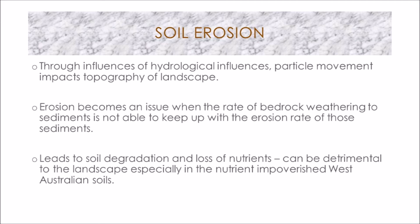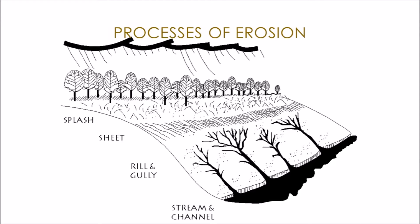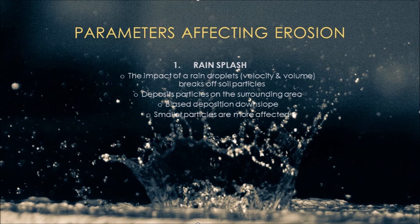The force of rainfall causes rain splash and contributes to the processes of sheet, rill, and gully erosion. Rain splash erosion occurs when rain droplets hit the ground with a force strong enough to mobilize soil particles. This creates an impact crater caused by the volume and velocity of the rain droplet, breaking soil particles to be deposited in surrounding areas. This deposition becomes non-uniform when there is a slope, creating biased deposition downslope.